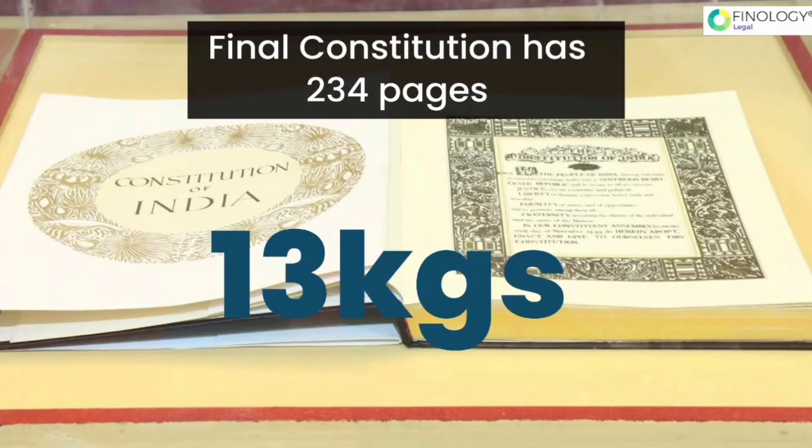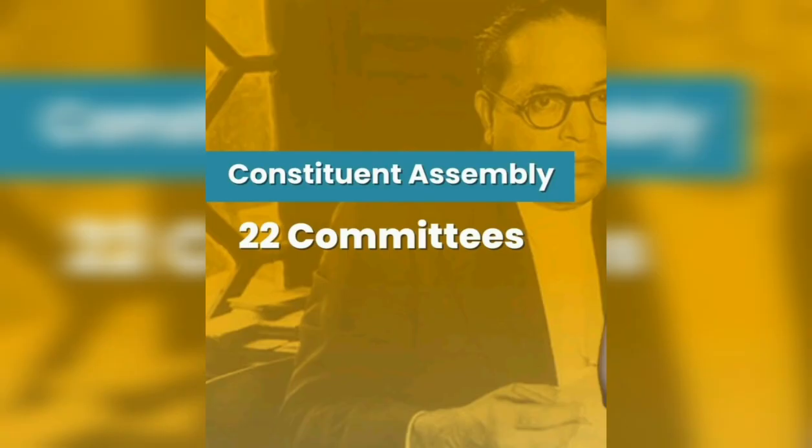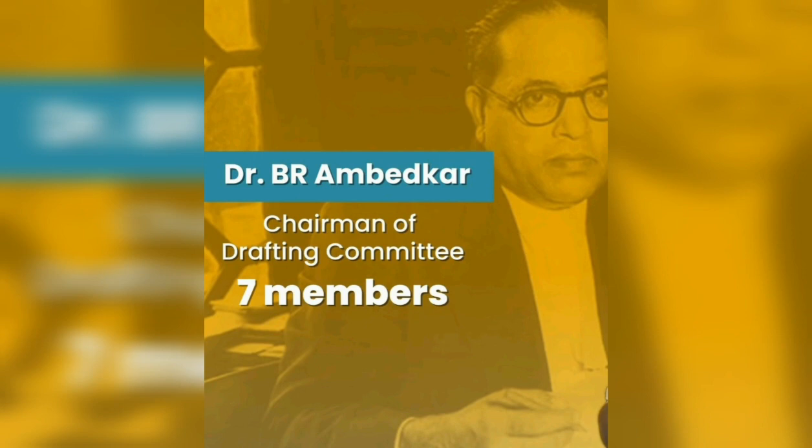The final constitution consists of 234 pages and weighs 13 kg. The Constituent Assembly constituted 22 committees, among which the drafting committee was the most important one. The drafting committee was constituted on 29th August 1947.